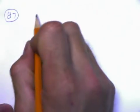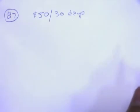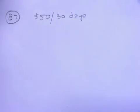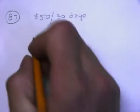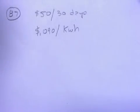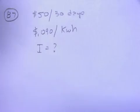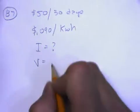Alright, number 87 says there's a window air conditioner that is estimated to have a cost of $50 per 30 days. This is based on the assumption that the air conditioner won't run half the time, and electricity costs $0.09 per kilowatt hour. Determine how much current the air conditioner will take with 120 volts.